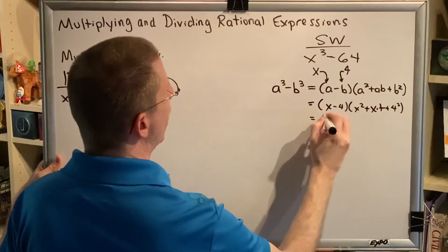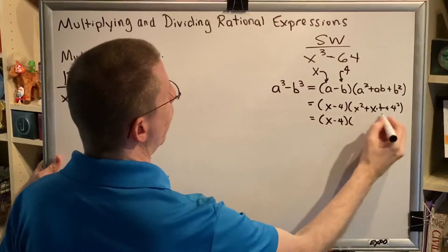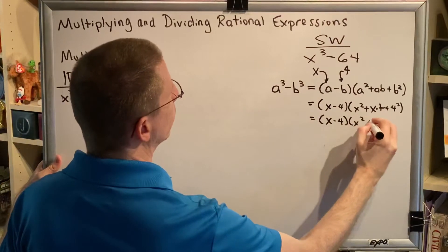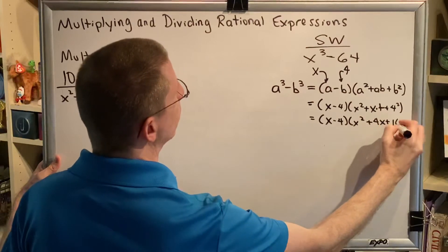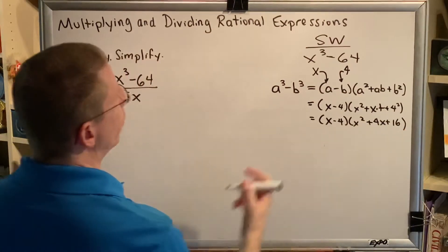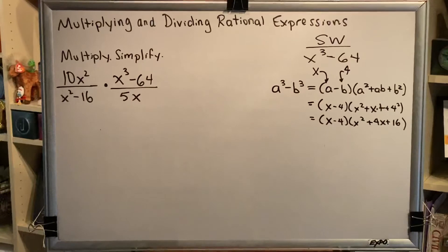Of course, we would never write x4 as a final answer in algebra. We write it as 4x. And 4² happens to be 16. So we've now factored this difference of cubes.